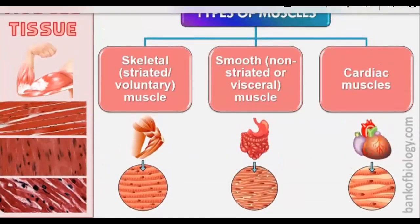Now let us go to the next part: the types of muscles. The muscles are of three types. The first is skeletal muscles, also known as striated muscles or voluntary muscles. The next type is smooth muscles, also called non-striated muscles or visceral muscles. And the third type is cardiac muscles. Every muscle is made of muscular fibers.